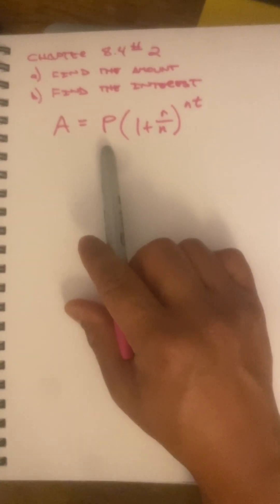Of course, P is the principle. 1 plus R is our rate, always as a decimal. N is the number of times that we compound per year. And as usual, T is the number of years.